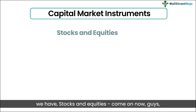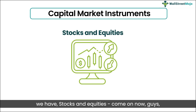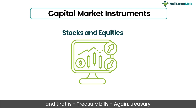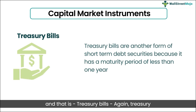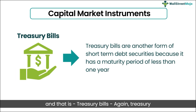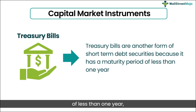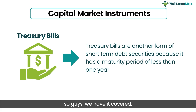Moving on, we have stocks and equities — we've got that covered already. Which brings us to the next financial instrument on our list: treasury bills. Treasury bills are another form of short-term debt securities, because they have a maturity period of less than one year, and technically operate like a bond — so we have that covered too.